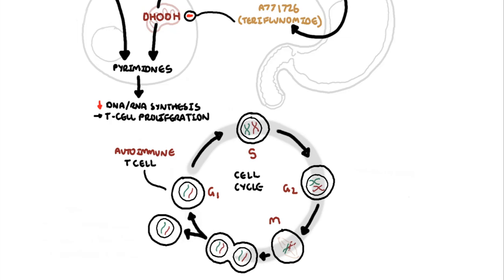It doesn't have any pyrimidines to make new DNA. The autoimmune T-cells are arrested in the G1 phase of the cell cycle.